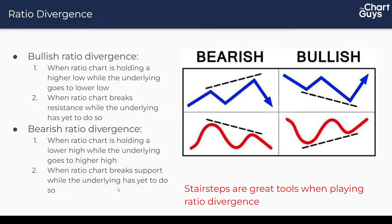In a bearish divergence example: we have a higher high on the name we're playing but a lower high on the ratio — that tells you to be skeptical. You have the most confidence when your ratio chart is making the move along with the chart you're actually playing. Again, stair steps are a great tool when playing divergences — anytime you're trying to play a lower low without follow-through. It can be tough to manage risk: if you're looking to buy after losing support, you could say you'll give it 0.2%, but that's ultimately arbitrary. We can zoom in and use smaller time frame clues to pinpoint entries when we have reason to do it — and that reason is the ratio chart.